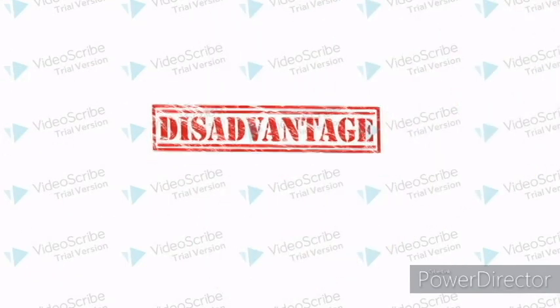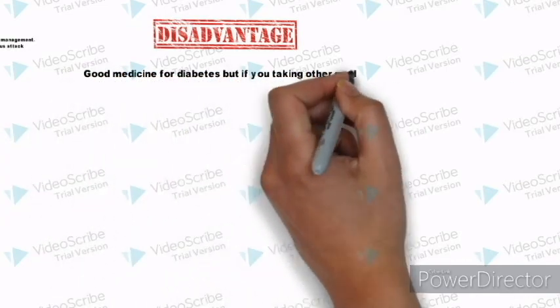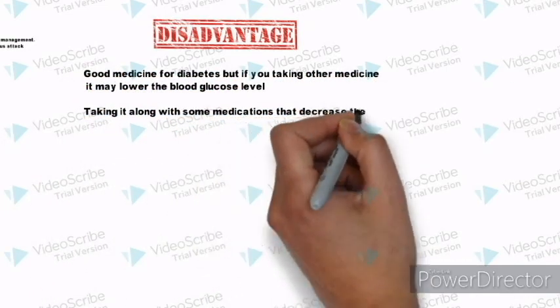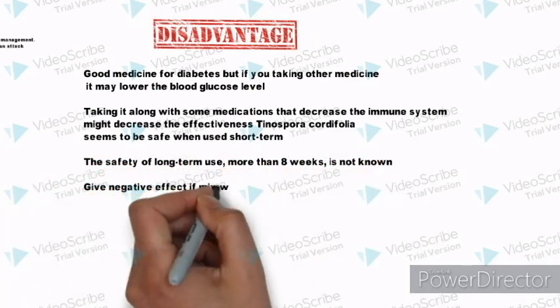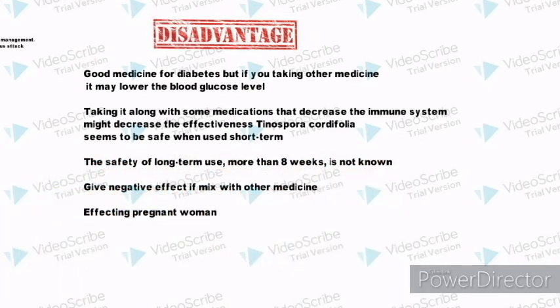Disadvantages: Good medicine for diabetes but if you're taking other medicine it may lower the blood glucose level. Taking it along with some medications that decrease the immune system might decrease the effectiveness. Tinospora cordifolia seems to be safe when used short term but the safety of long term use, more than 8 weeks, is not known. It gives negative effects if mixed with other medicine and also affecting pregnant women.